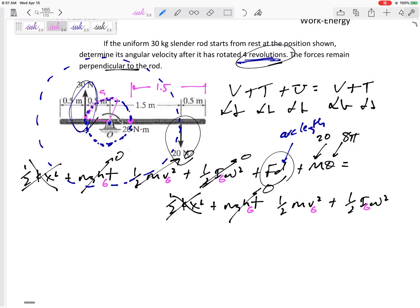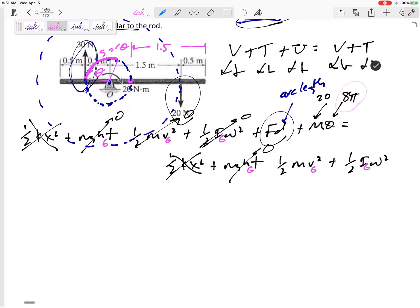This distance, arc length, is r theta. I know that theta is 8 pi, so let's get this. I've got a 30 Newton force and its distance that it acts is r theta. The r is always the distance to the center of rotation, that 30 Newton force. It's not the distance to point G, it's not half the distance of the slender rod. It's the distance it is from the center of rotation, and the theta for four revolutions is 8 pi. Make sure that theta is in radians.